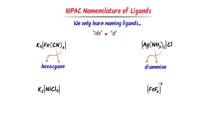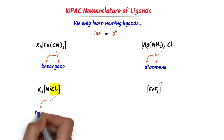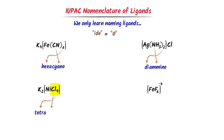Thirdly, in case of this coordination compound, the ligand is chlorine and there are four ions of chlorine. I write 'tetra', for chlorine ion I write 'chloro', thus I get 'tetrachloro'. Fourthly, in case of this coordination compound, the ligand is fluorine and there are six fluorine ions. For this six I write 'hexa', for the fluorine ion I write 'fluoro', thus I get 'hexafluoro'. Hence, note down these four examples.